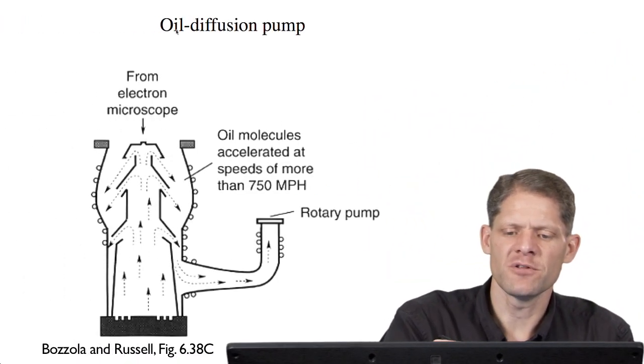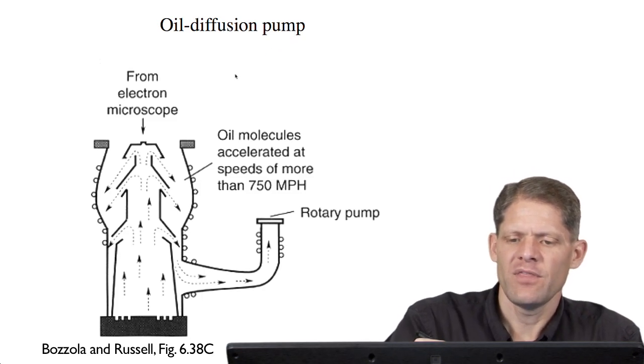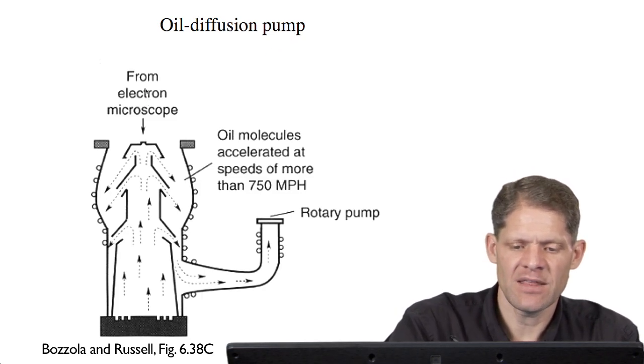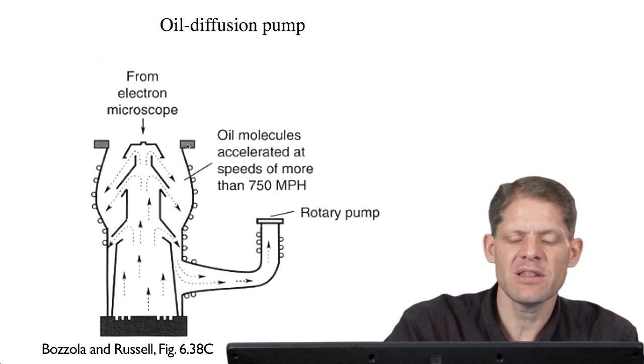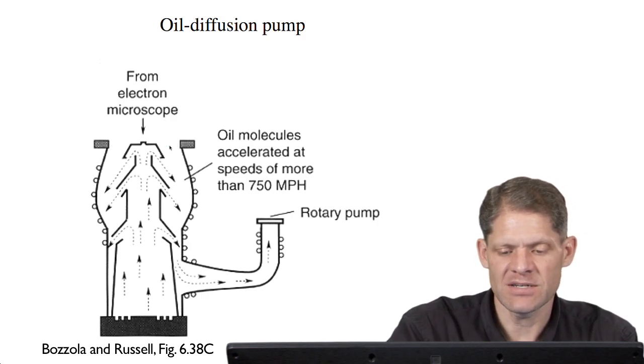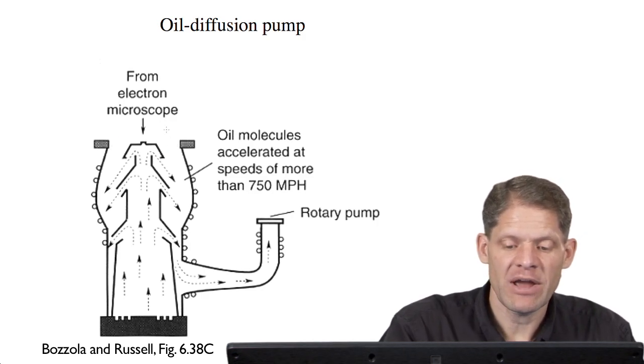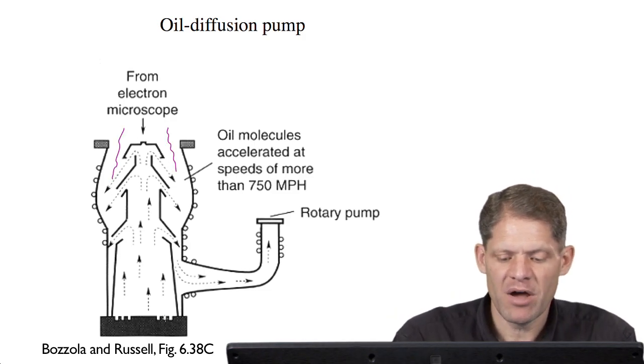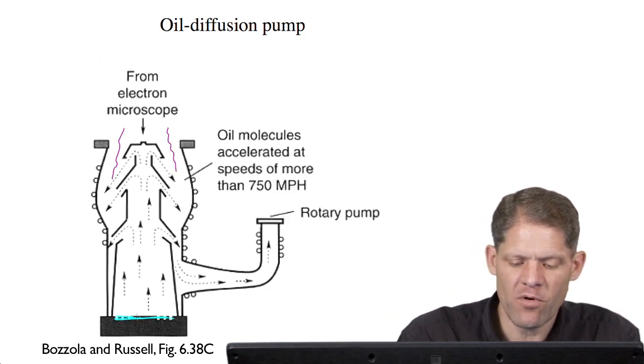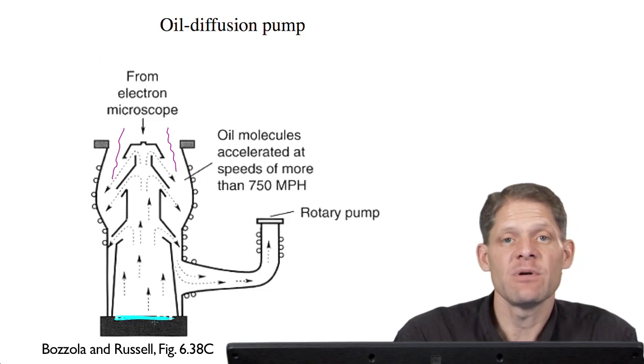which is the oil diffusion pump. The anatomy of this pump is that it's usually mounted directly below the electron microscope column. So the column connects into the top. Gases from the microscope column diffuse into these chambers. At the bottom of the pump, there's a reservoir of oil. And that reservoir is heated.